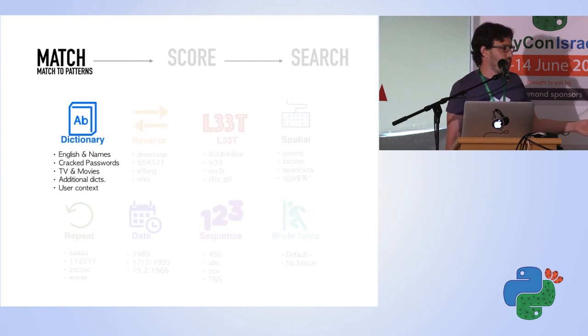You can also add your additional dictionaries, like with the URL of your site, your site name, some maybe original information—for example, passwords in Hebrew. You can also add the user context. When you call the function, you can send some parameters about the user, for example the username, the user email, and so on.